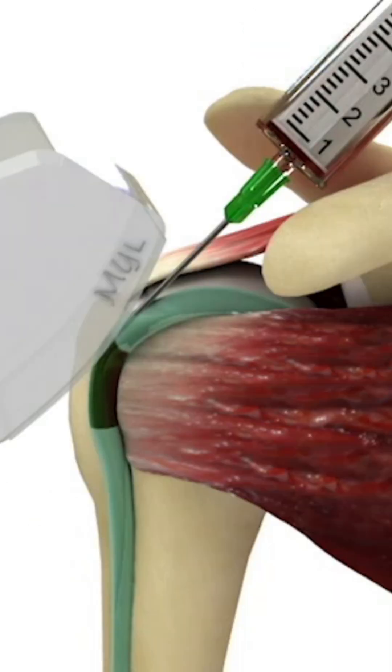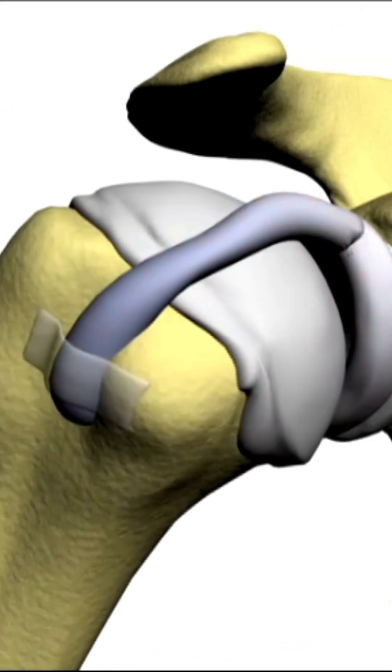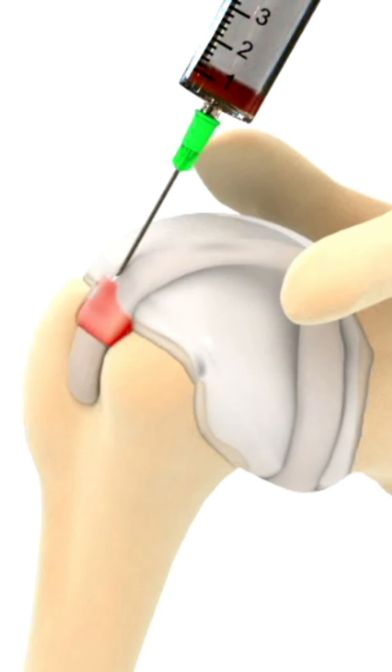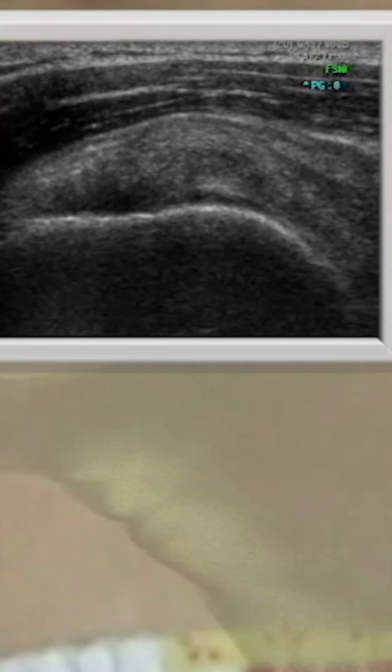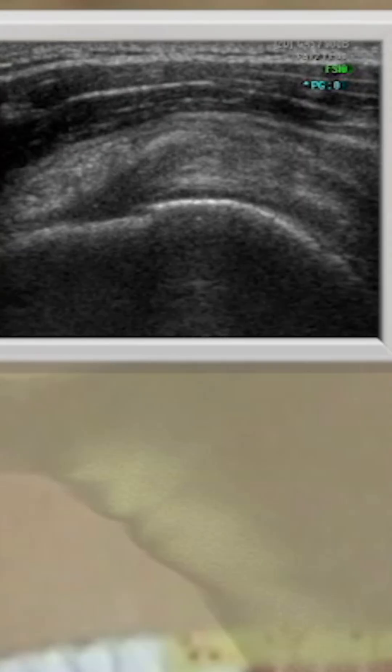4. Biceps tendonitis. Damage or inflammation of the biceps brachii is one of the important causes of shoulder pain. Ultrasound plays a vital role in accurately assessing the condition of the biceps brachii and determining necessary treatments. It evaluates the extent of inflammation or damage, forming the basis for an effective treatment plan.